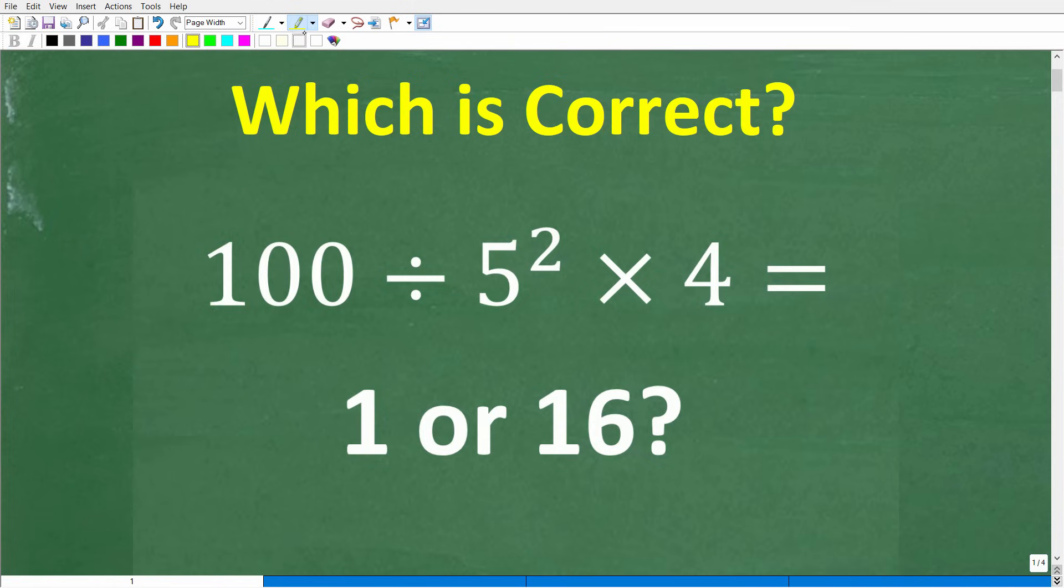And the question is 100 divided by 5 squared times 4. So I'm going to narrow this down to these two answers, and one of these answers is correct. And that is 1 or 16.